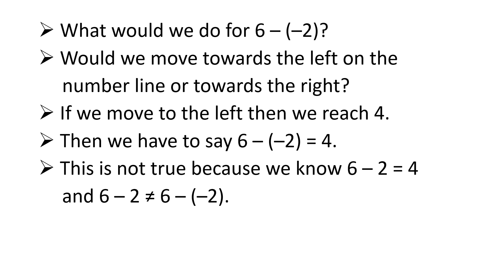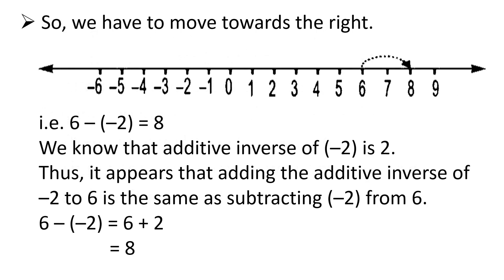Now, what would we do for 6 minus minus 2? Would we move towards the left on the number line or towards the right? If we move to the left, then we reach 4, and we would say 6 minus minus 2 is equal to 4. But this is not true because we know 6 minus 2 is equal to 4, and 6 minus 2 is not equal to 6 minus minus 2. So we have to move towards the right.